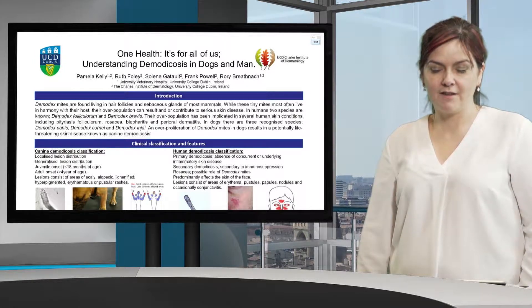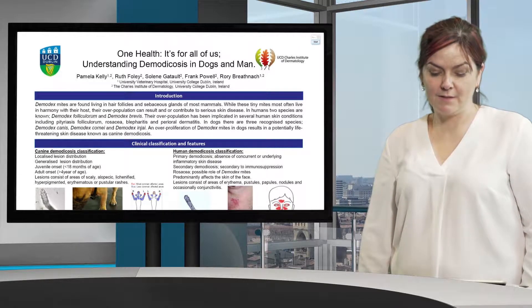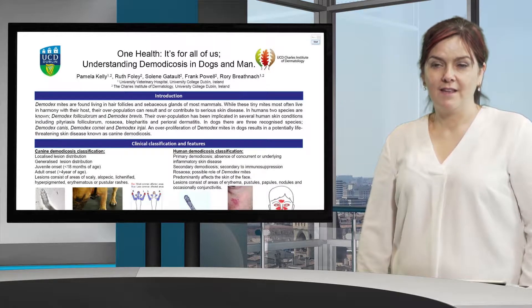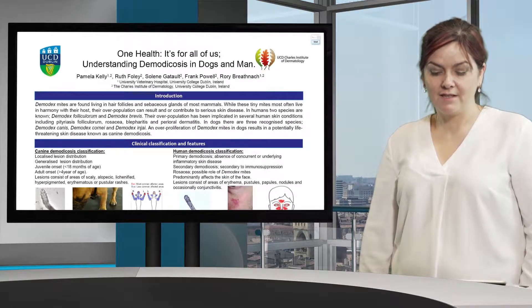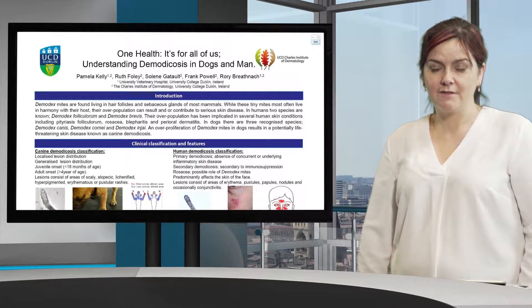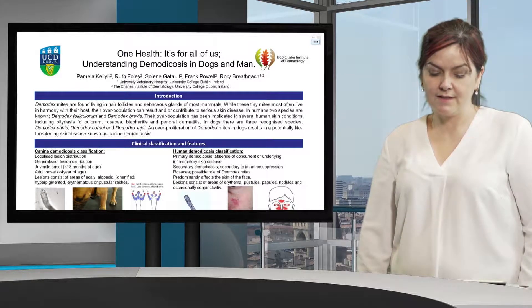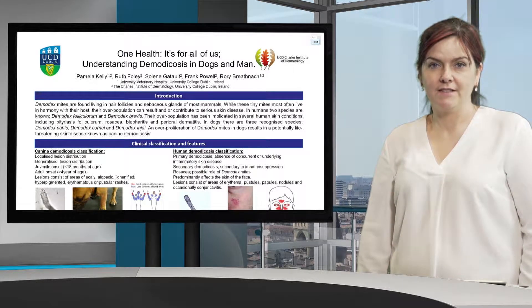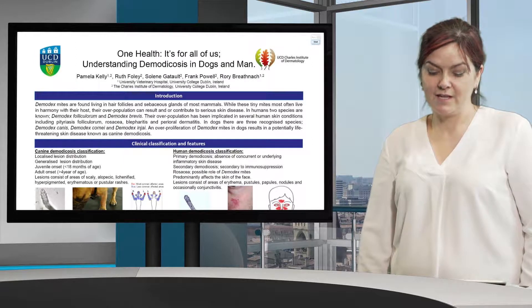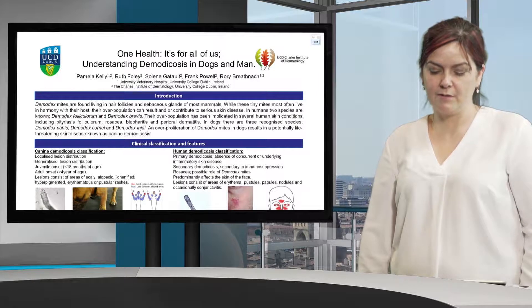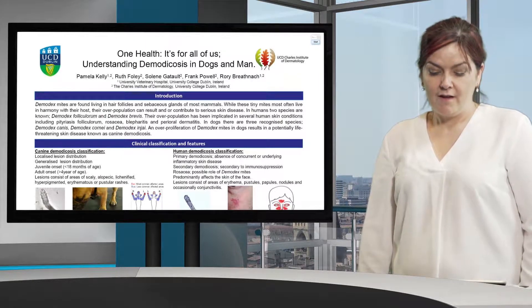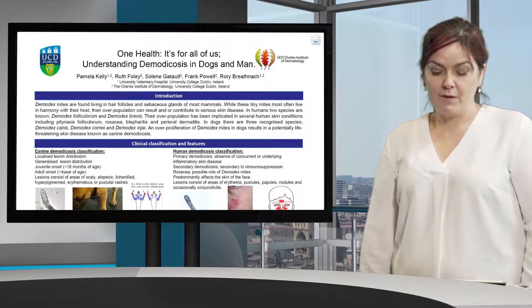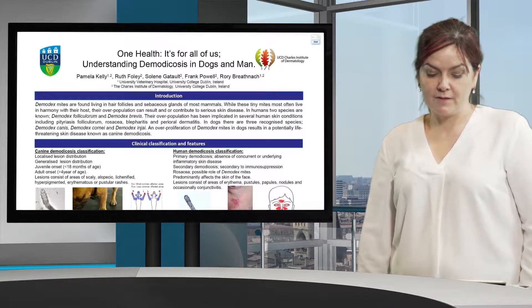In animals, especially in dogs, there are three demodex species: Demodex canis, Demodex cornei, and Demodex injai. Demodex in all species are associated with serious skin disease, and it is an overpopulation of these demodex mites that results in these diseases. In dogs, demodex mites can result in a potentially life-threatening skin disease known as canine demodexosis. In this poster, I compare both human and canine demodexosis.